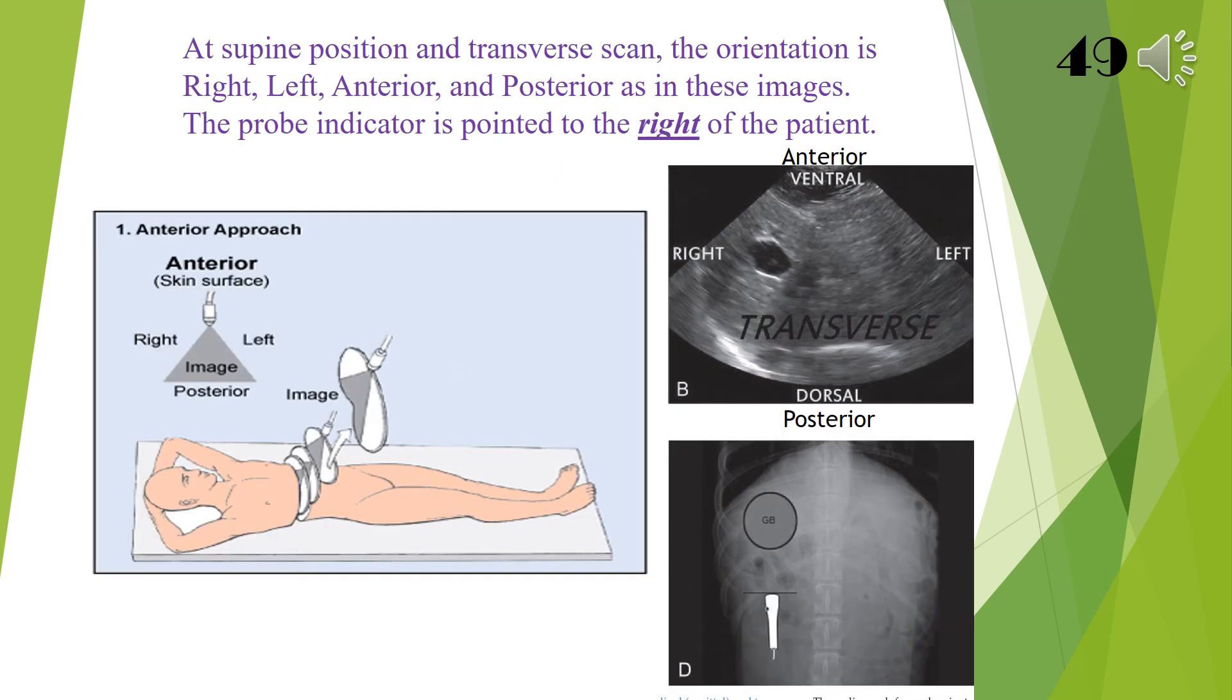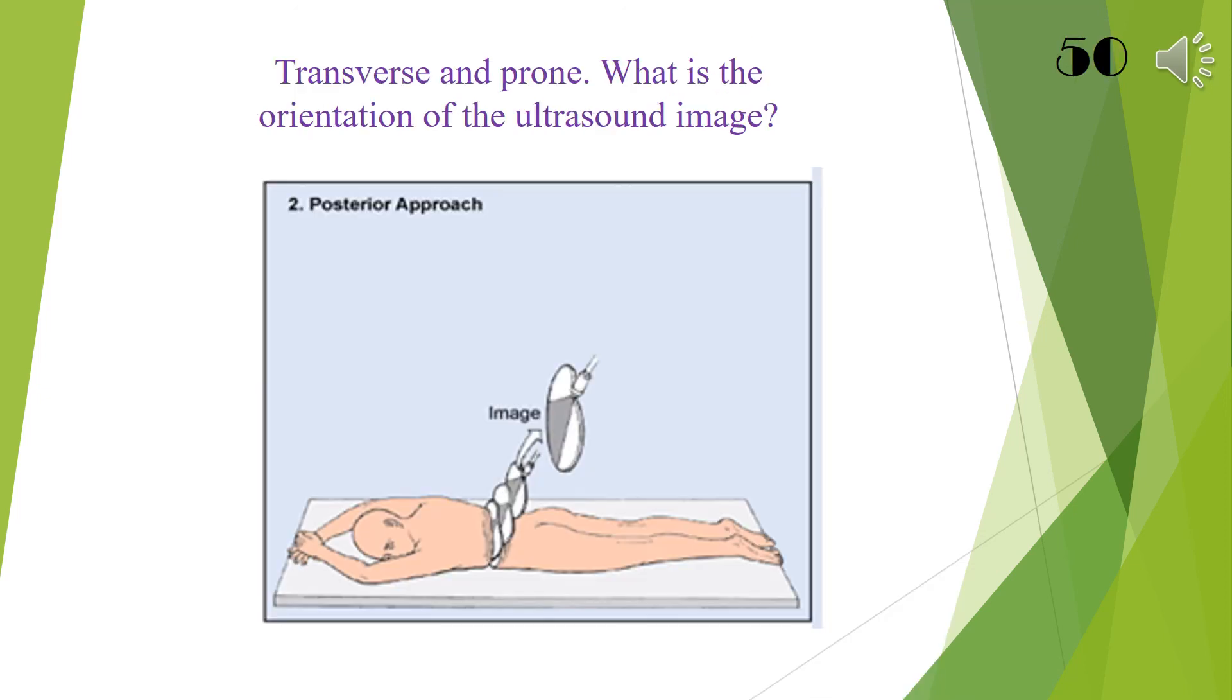Transverse and supine, what is the orientation of the ultrasound image? At supine position and transverse scan, the orientation is right, left, anterior, and posterior as in these images. The probe indicator is pointed to the right of the patient.